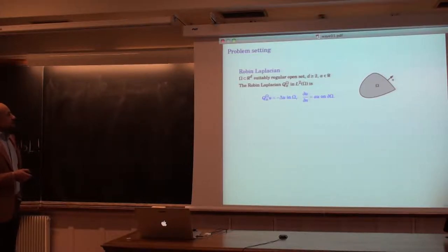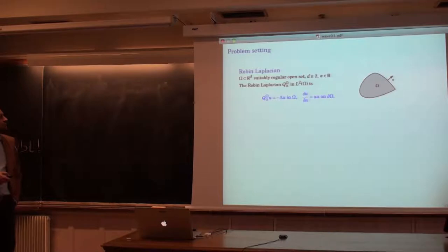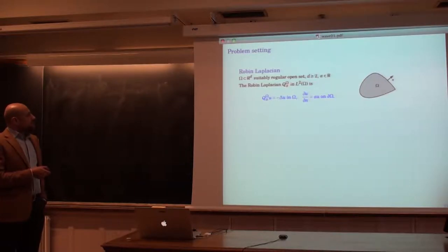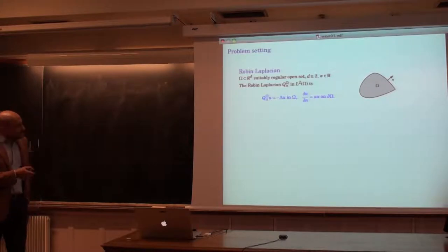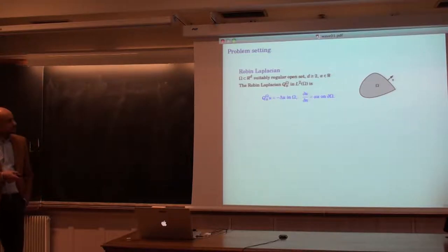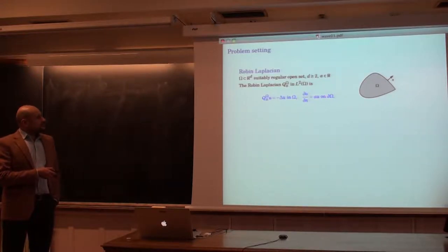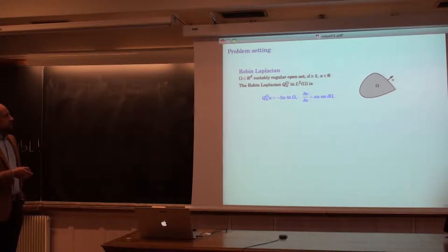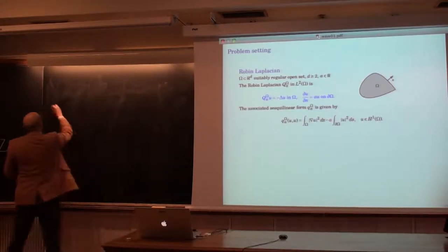If I take a suitably irregular open set Ω in R^d — just to make it geometric, I assume the dimension is at least two — and if I choose a real number α, then the Robin Laplacian, which I will denote Q_{Ω,α}, will be viewed as a self-adjoint operator in L²(Ω). The formula is defined so that it acts as minus Laplacian, and the outer normal derivative at the boundary is proportional to the value of the function on the boundary. What is important here is the fact that this is the outer normal.